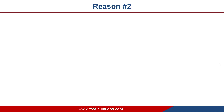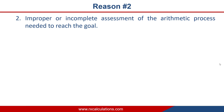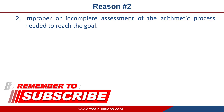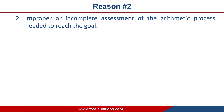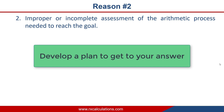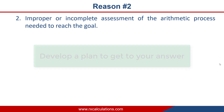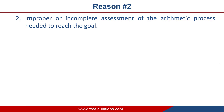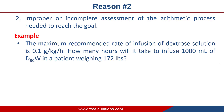Now let's look at reason number two: improper or incomplete assessment of the arithmetic process needed to reach the goal. If reason one is not an issue — meaning you completely understand the purpose of the question — the next thing you want to do is develop a plan to get to your answer. It's always about speed and accuracy. Let's take the same example and see how we could develop a plan to arrive at the solution expeditiously.